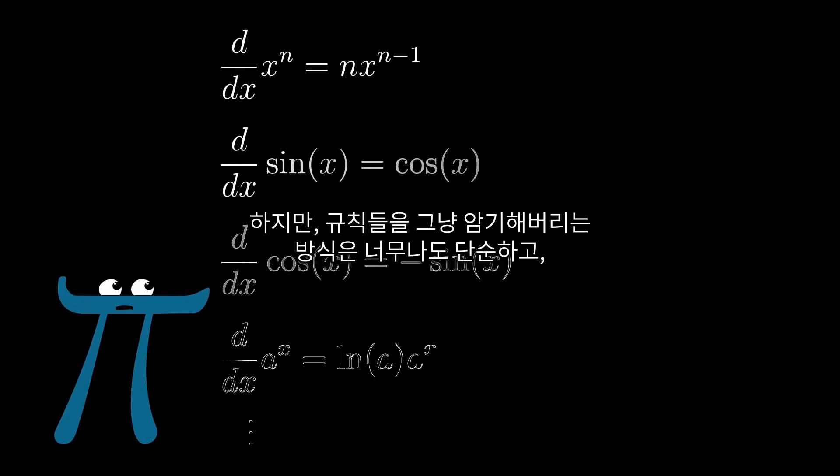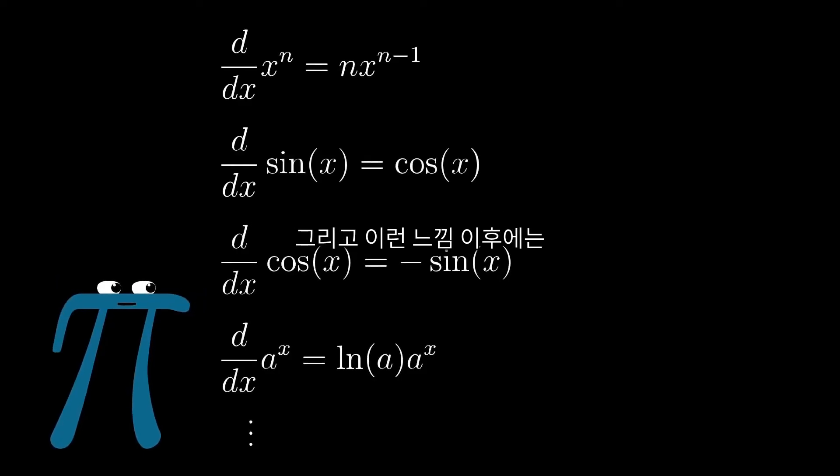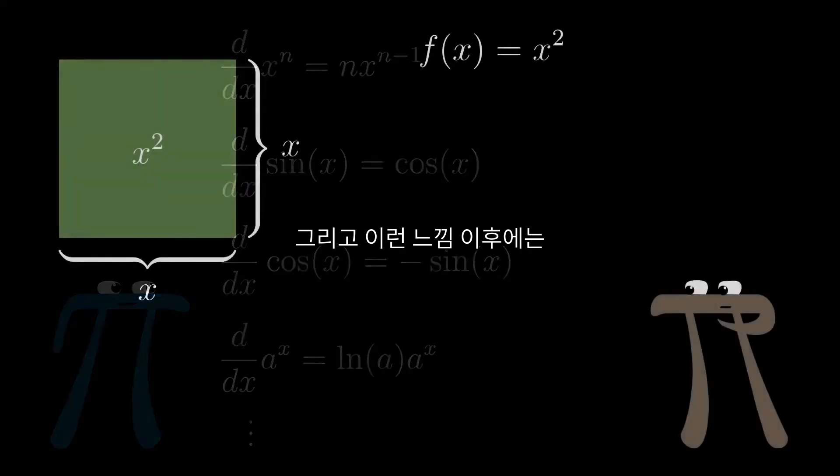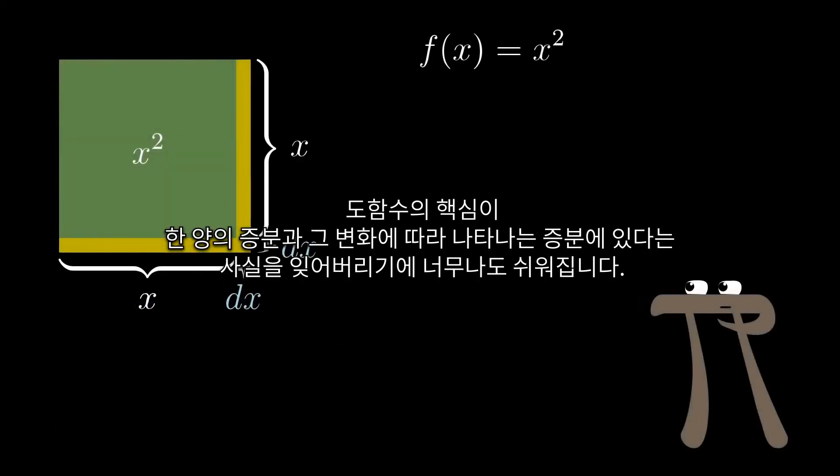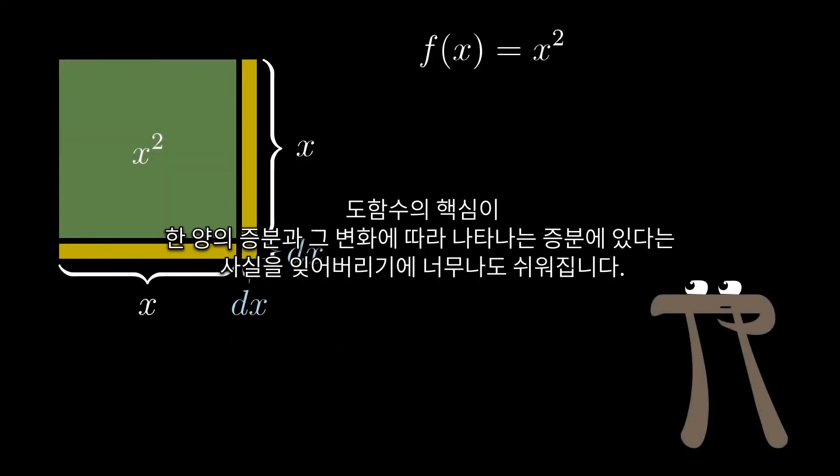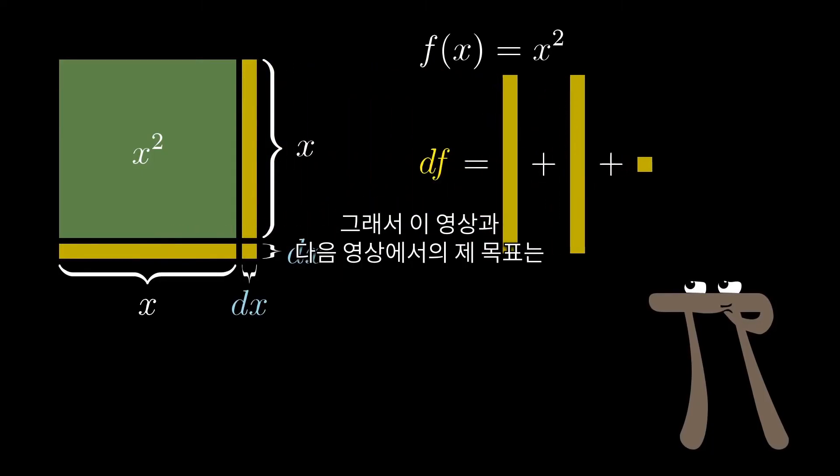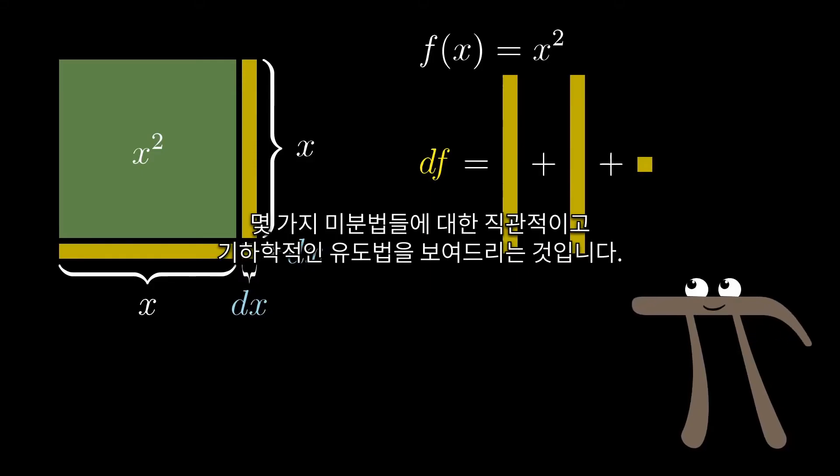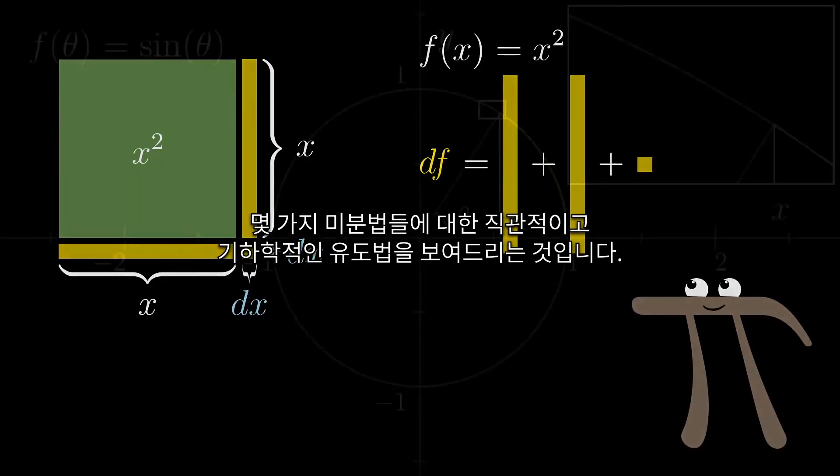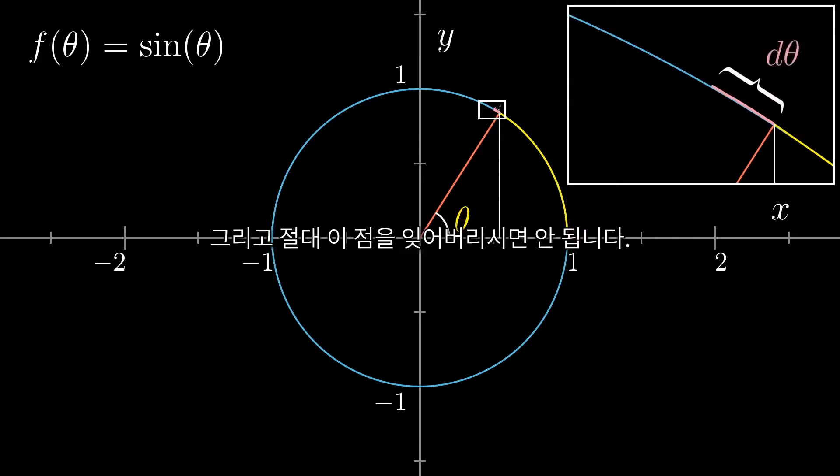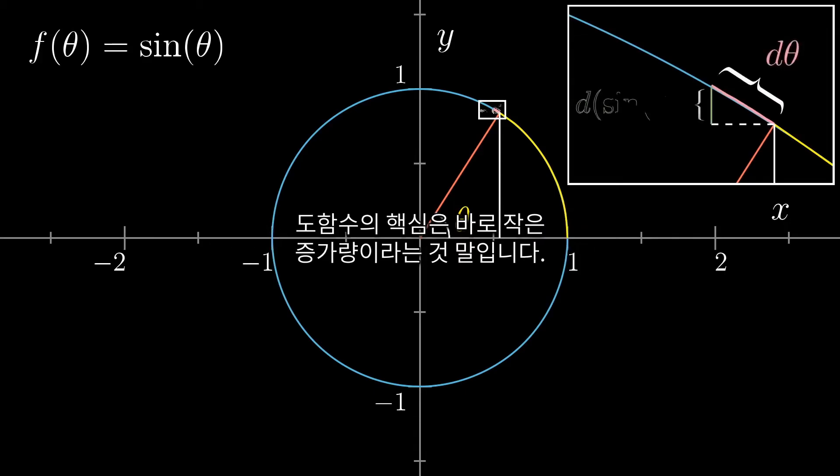But it is way too easy for this process to feel like just memorizing a list of rules, and if that happens, it's also easy to lose sight of the fact that derivatives are fundamentally about just looking at tiny changes to some quantity, and how that relates to a resulting tiny change in another quantity. So in this video, and in the next one, my aim is to show you how you can think about a few of these rules intuitively and geometrically, and I really want to encourage you to never forget that tiny nudges are at the heart of derivatives.